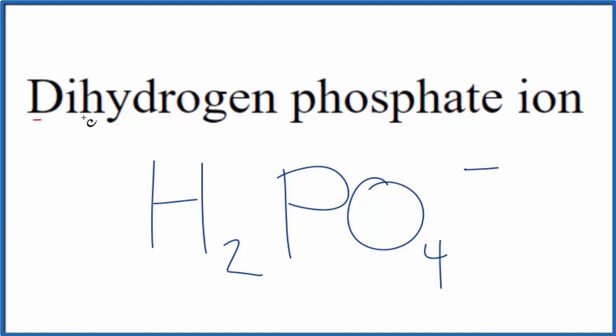So this is the formula for the dihydrogen phosphate ion. If you need help drawing the Lewis structure for H2PO4 minus, there's a link at the end of this video. This is Dr. B with the formula for dihydrogen phosphate. Thanks for watching.